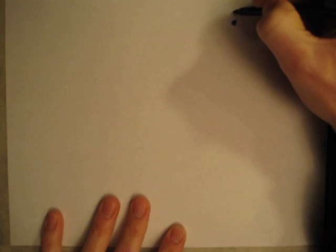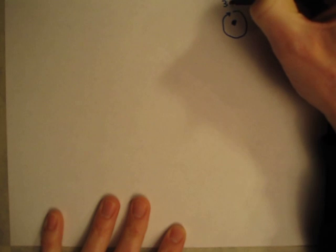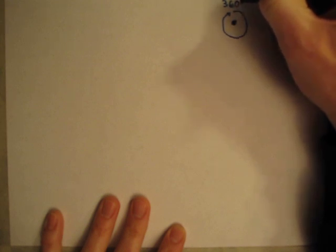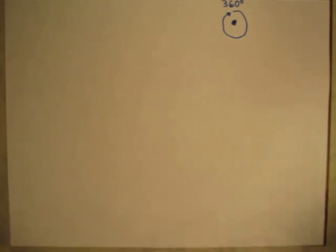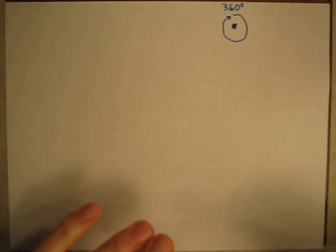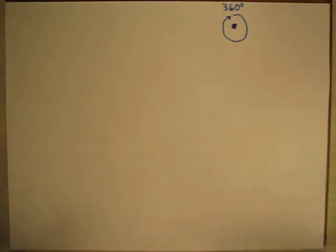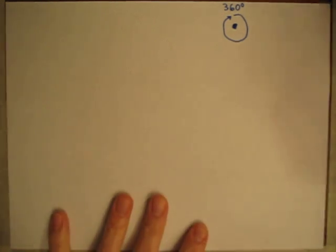Let's look at the number of degrees. If I pick a point and go all the way around that point, that would be 360 degrees — just like there are 360 degrees around a circle or on a compass. If you do a complete spin back to where you started, you've turned 360 degrees.